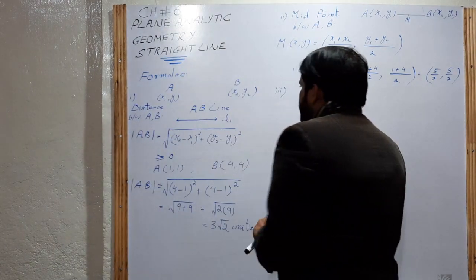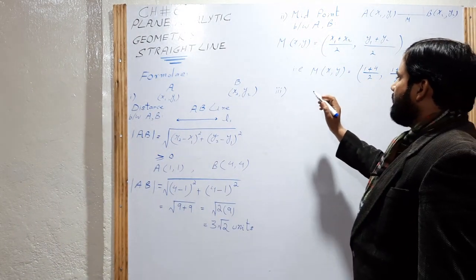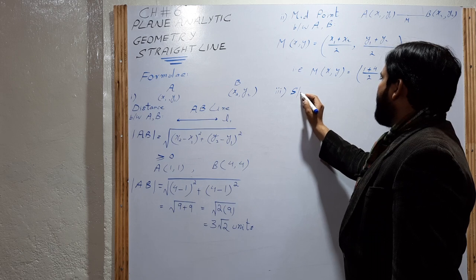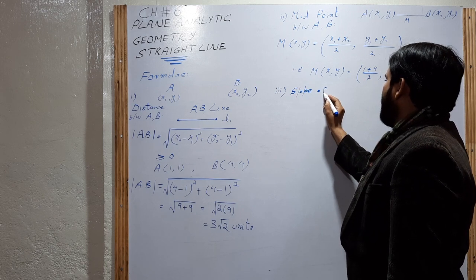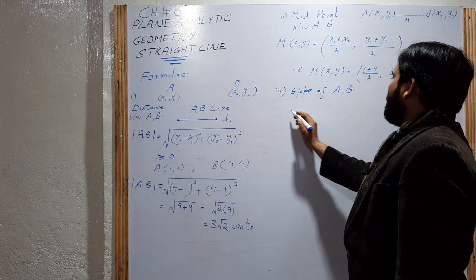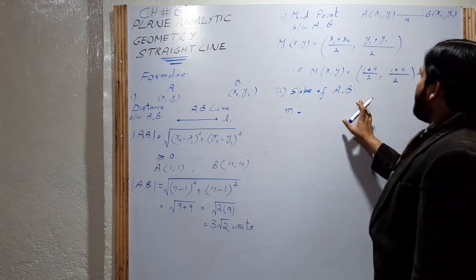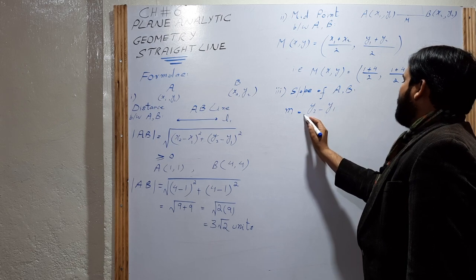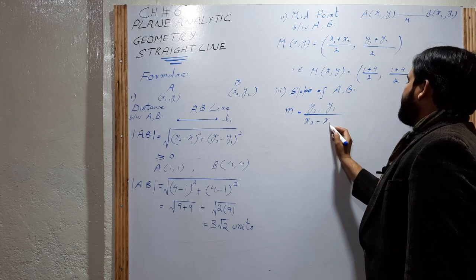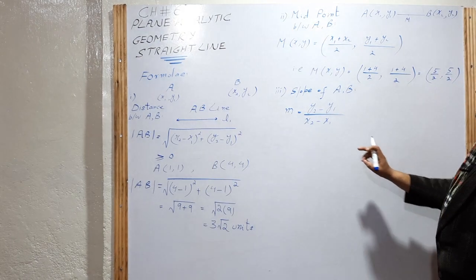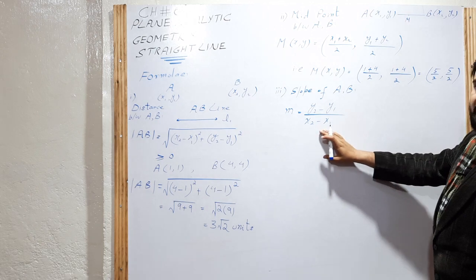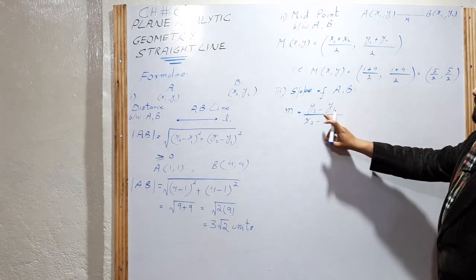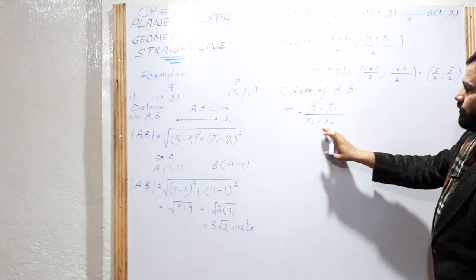The third formula is the slope of a line, or the slope between two points A and B. Slope is represented by m. For two points (x1, y1) and (x2, y2), the slope is: m = (y2 − y1) / (x2 − x1). Slope means the change in vertical distance divided by the change in horizontal distance — rise divided by run.